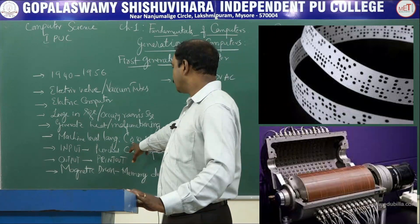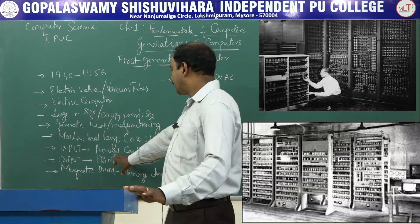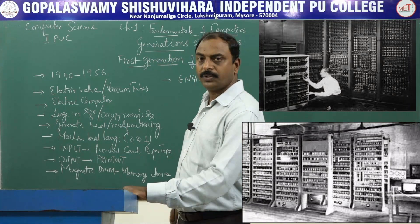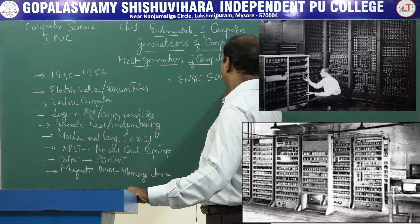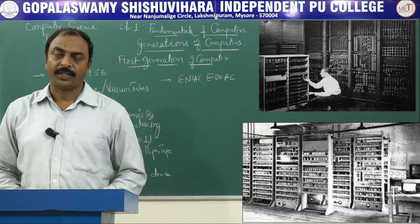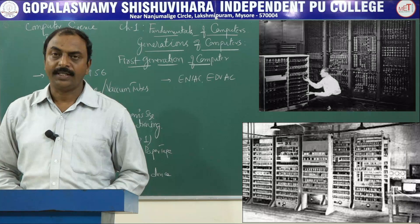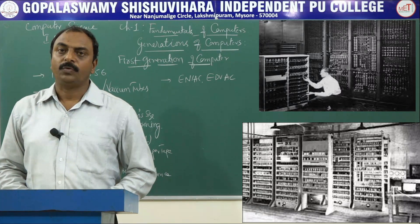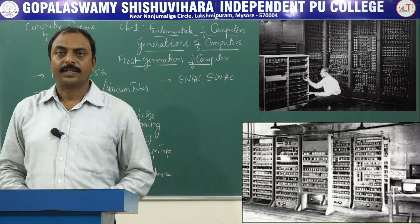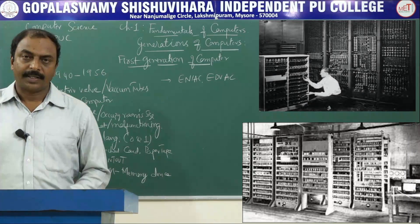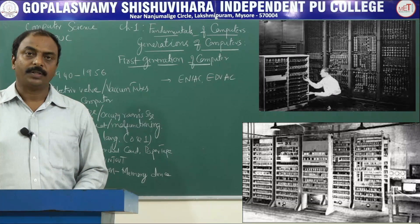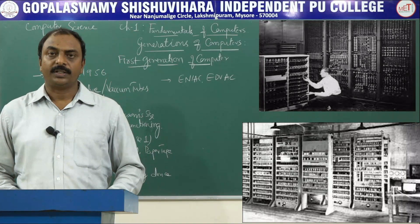They were using punch cards and paper tape as input devices. Output was in the form of printouts. Magnetic drum was used as a memory device. ENIAC and EDVAC are the two computers that belong to the first generation of computers.